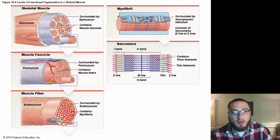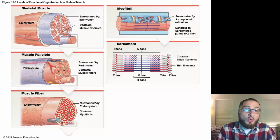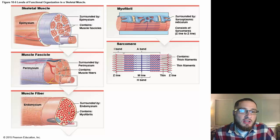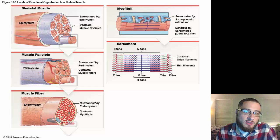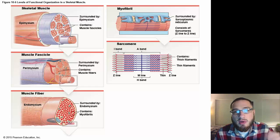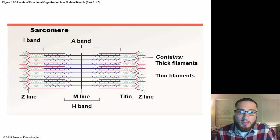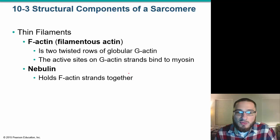To summarize the hierarchy: we have an entire muscle organ covered in epimysium; within that, muscle fascicles covered in perimysium; within those, individual muscle fibers covered in endomysium. Inside the muscle fibers we have myofibrils, and within the myofibrils many repeating functional units — the sarcomeres — which are responsible for contraction.